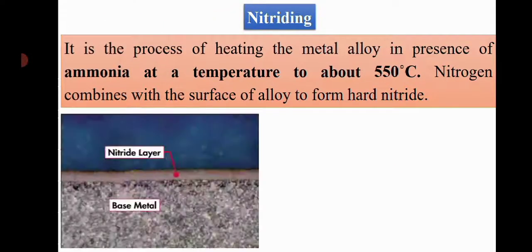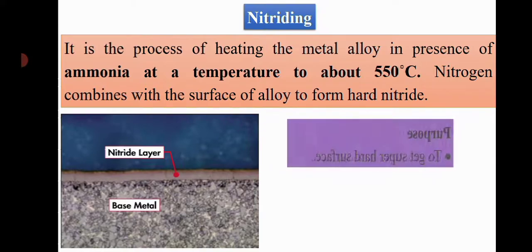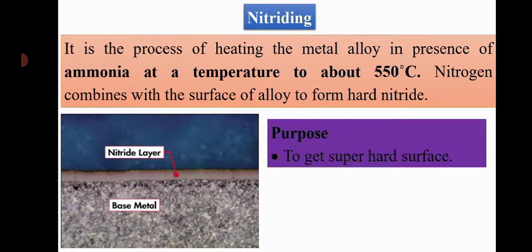Nitriding is the process of heating the metal alloy in the presence of ammonia at a temperature of about 550 degrees Celsius. Nitrogen combines with the surface of the alloy to form hard nitride. The purpose is to get a super hard surface.